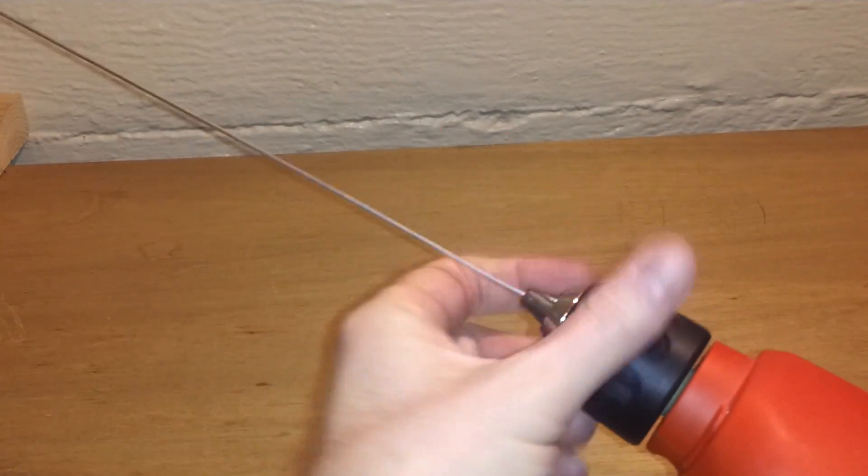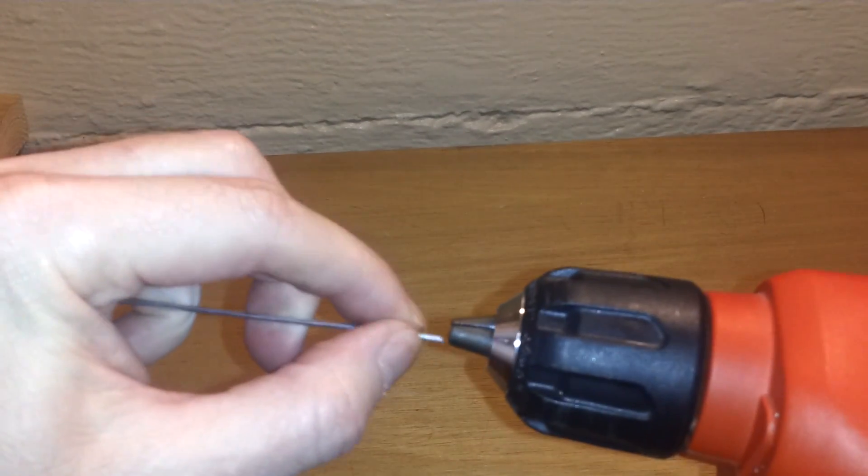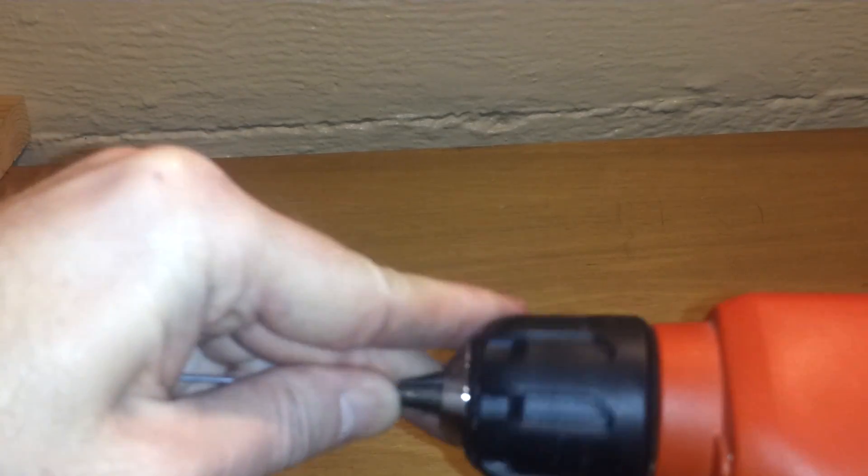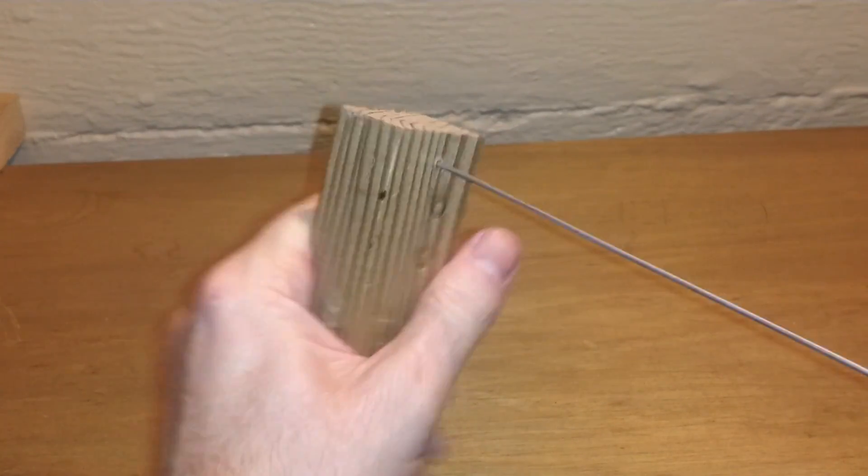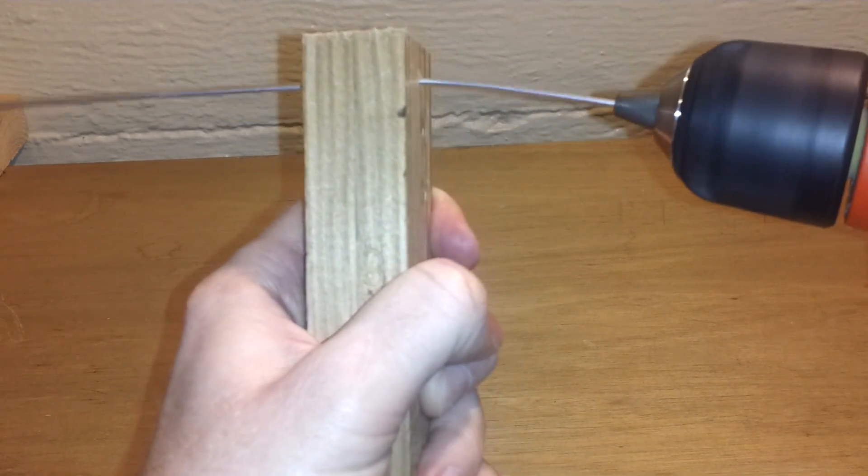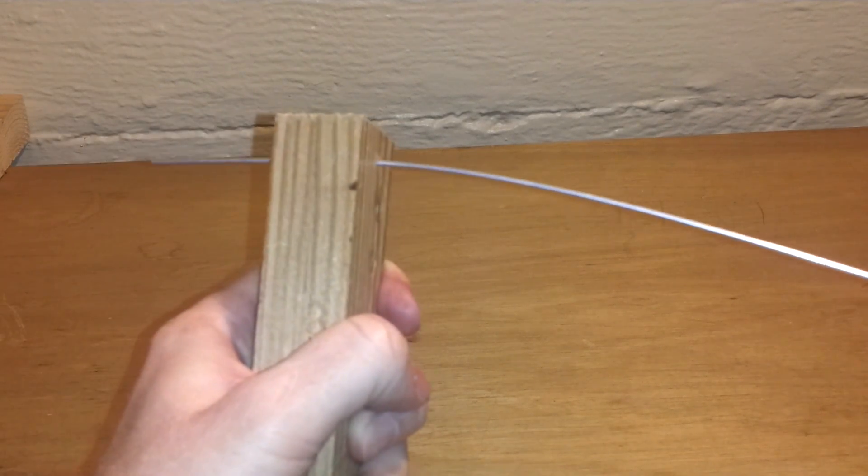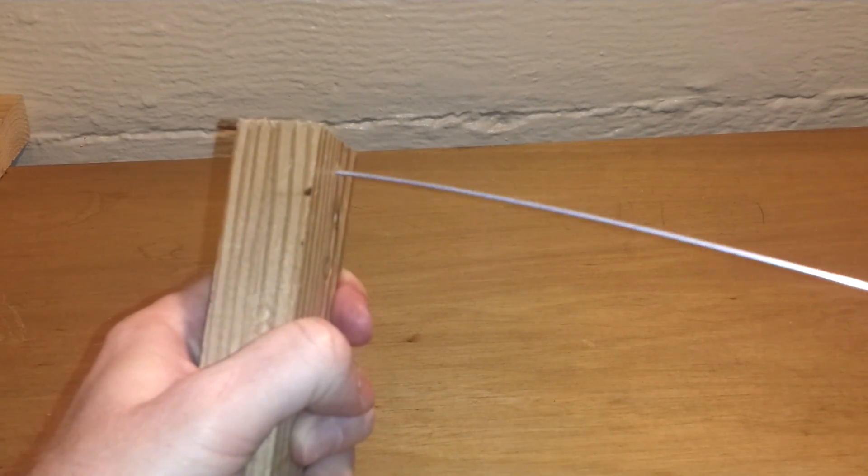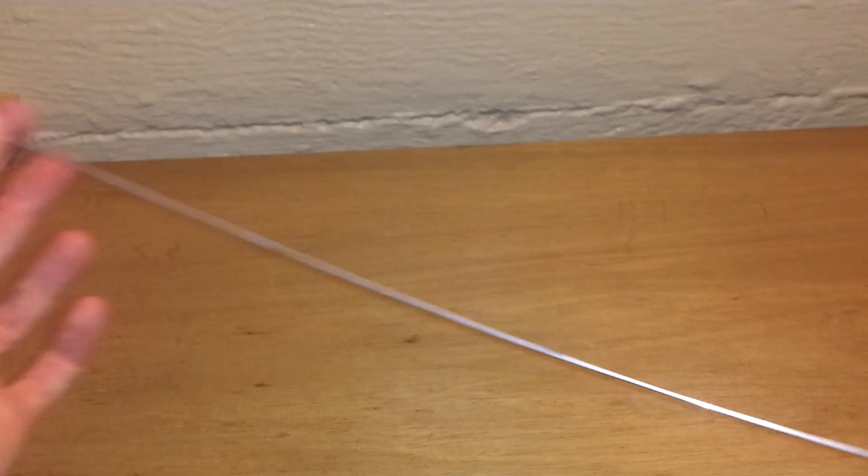Then you just take it out of your chuck, put the other end in and you do the same thing. Put in about an eighth of an inch. Tighten the chuck down. Just feed it through your block. Bend it about a little, maybe five degrees. Then your wire comes out straight.